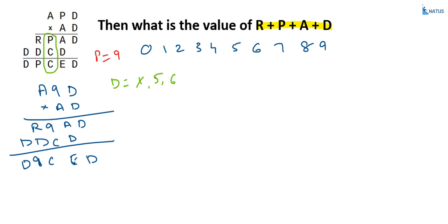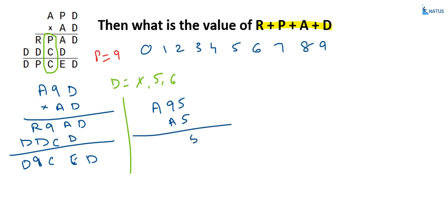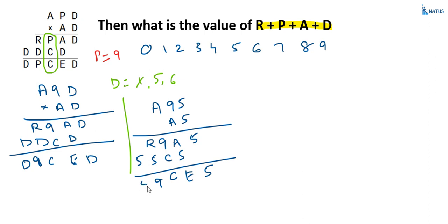We check D equals 5 first. If satisfied, D equals 5; otherwise D equals 6. Taking D equals 5, the number becomes A95 into 75. The partial products become: 5 and A, next 9, D equals 5; and A9R equals A9R. The row is 5, C, 5, 5. And the sum row is 5, E, C, 9, 5. Now, 9 plus C equals C in the addition.